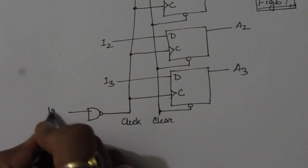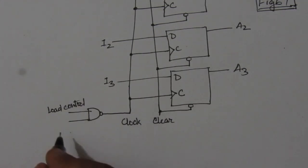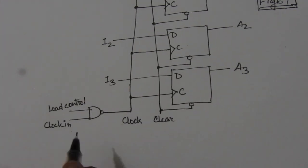So here we will have two inputs for this NAND gate. One will be for the load control, and here we will have the clock input. Suppose this is clock_in.